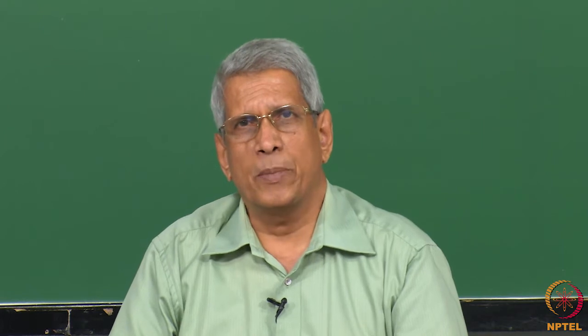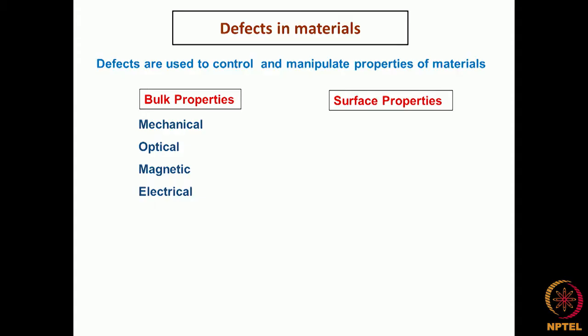What are the bulk properties these defects affect? The mechanical behavior of the material — various mechanical properties can be affected by introducing different types of defects. You already know that by deforming a material by mechanical means, by doing mechanical testing and introducing a lot of defects into the material, we can make the material stronger but at the same time reduce its ductility. Similarly, by introducing defects into optical materials, we can produce different color centers so that we can change the color of the material — optical properties can be drastically changed.